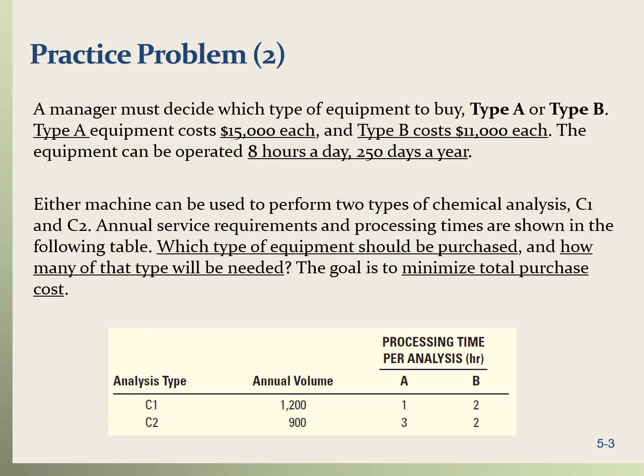Let's do Practice Problem 2. A manager must decide which type of equipment to buy: Type A or Type B. Type A equipment costs $15,000, and Type B equipment costs $11,000. The equipment can be operated 8 hours a day for 250 days a year, so the total working hours in a year is 8 multiplied by 250 — 2,000 hours. The goal is to minimize total purchase cost.